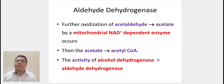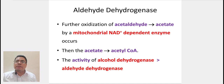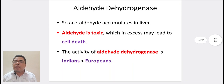Coming to aldehyde dehydrogenase. Further oxidation of acetaldehyde to acetate is by a mitochondrial NAD+ dependent enzyme. The acetate is then converted into acetyl-CoA. The activity of alcohol dehydrogenase is more than aldehyde dehydrogenase, so acetaldehyde accumulates in the liver, and aldehyde is toxic which in excess may lead to cell death. The activity of aldehyde dehydrogenase is less in Indians as compared to Europeans.